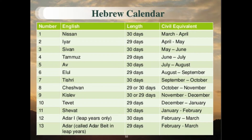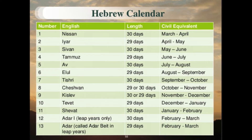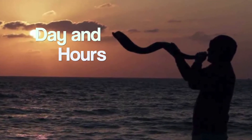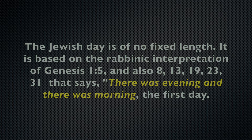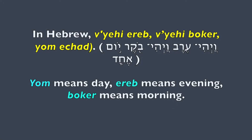Here is the sacred calendar showing the number of days per month and the modern Gregorian calendar equivalent. The Jewish day is of no fixed length. It is based on the rabbinic interpretation of Genesis 1:5, 8, 13, 19, 23, and 31, which says: 'There was evening and there was morning, the first day.' In Hebrew: Yom means day, Erev means evening, Boker means morning.